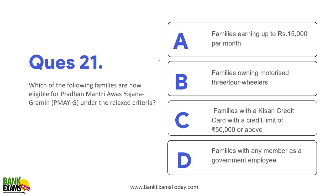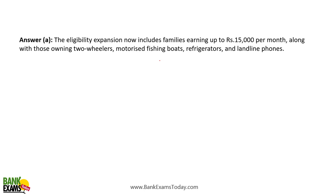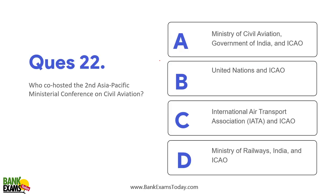Which families are now eligible for Pradhan Mantri Awas Yojana Grameen under the relaxed criteria? Families earning up to 15,000 rupees a month are now eligible. Who co-hosted the second Asia-Pacific Ministerial Conference on Civil Aviation? The Ministry of Civil Aviation, Government of India, and ICAO co-hosted it.